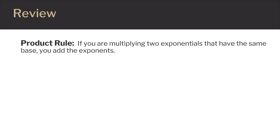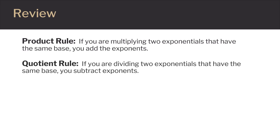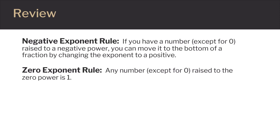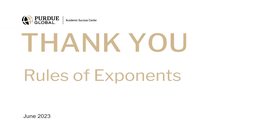Let's sum up the four rules we talked about. When using the product rule, if you are multiplying two exponentials that have the same base, you add the exponents. When using the quotient rule, if you are dividing two exponents that have the same base, you subtract the exponents. When using the negative exponent rule, if you have a number except for zero raised to a negative power, you can move it to the bottom of a fraction by changing the exponent to a positive number. And when using the zero exponent rule, any number except for zero raised to the zero power is always one. Thank you for listening to this Math Center presentation on rules of exponents.